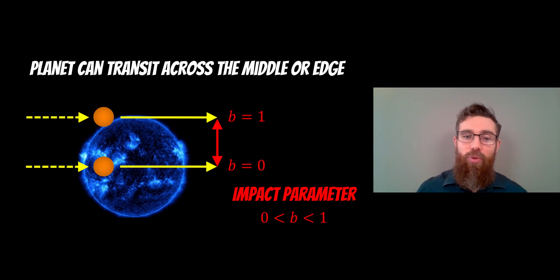Now the impact parameter is something that then denotes the position on the star that it's actually going to pass across. So the impact parameter b will be zero if the planet passes across the middle of the star and then it will go to one right towards the edge. So between zero and one, it's passing somewhere across the star. So this is our impact parameter.